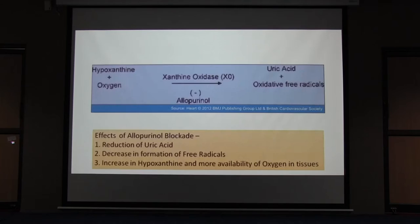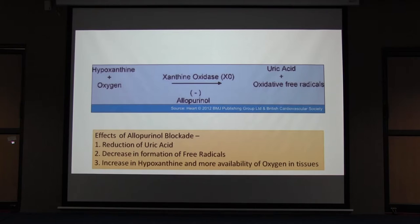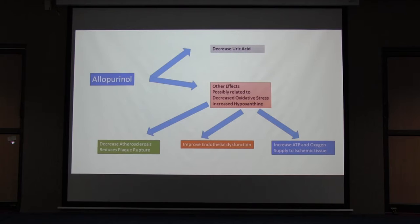How does allopurinol reduce cardiovascular morbidity? Allopurinol inhibits xanthine oxidase, which converts hypoxanthine plus oxygen into uric acid and oxidative free radicals. By inhibiting this, uric acid is reduced, free radical formation is diminished, and there is more availability of hypoxanthine and oxygen in tissues. This possibly leads to improvement. Summarizing: allopurinol's decrease in uric acid may not do everything directly, but decreased oxidative stress and increased hypoxanthine reduce atherosclerosis, decrease plaque rupture, improve endothelial dysfunction, and increase ATP and oxygen supply to the ischemic myocardium.